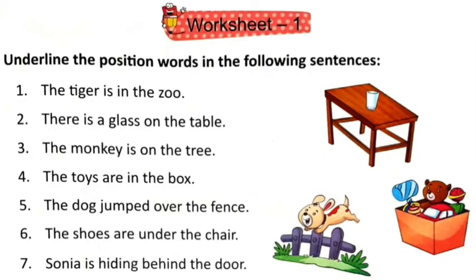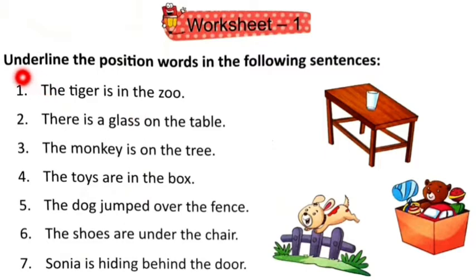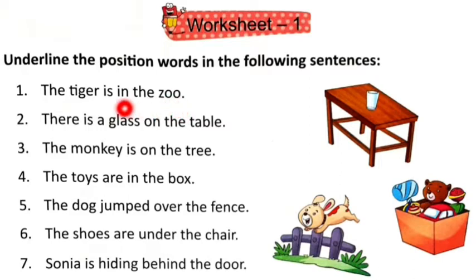Let us start doing the worksheets. This is worksheet 1, in which you have to underline the position words in the following sentences. Aapko kuch sentences given hai. Aapko in me position words ko underline karna hai. Number 1: The tiger is in the zoo. Position word kya hai? In. Aap isse underline kar denge.